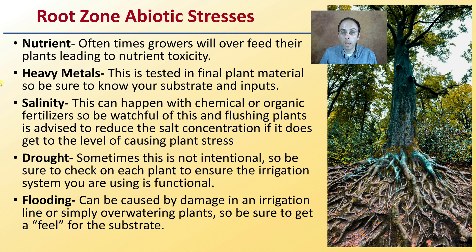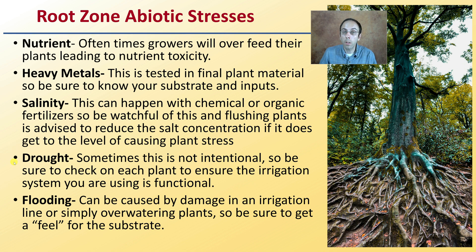Salinity can happen with chemical or organic fertilizers, so be watchful of this. Flushing plants is advised to reduce salt concentration if it reaches a level causing plant stress. Drought, sometimes unintentional, requires checking each plant to ensure your irrigation system is fully functional. Flooding can be caused by damage to an irrigation line or simply overwatering, so get a feel for the substrate of each individual plant to make sure you're not over or underwatering.